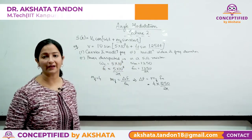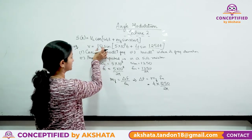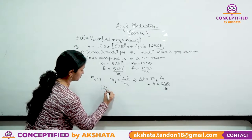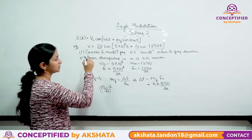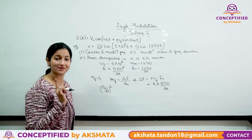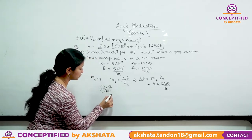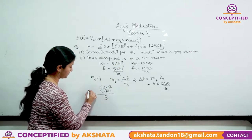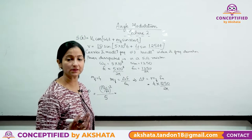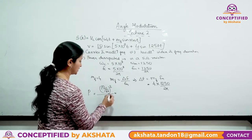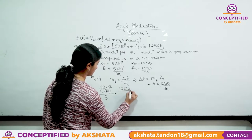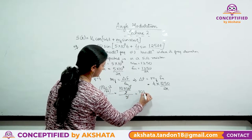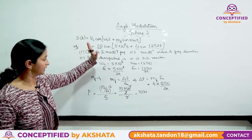For power dissipated in a 5-ohm resistor, power comes from the amplitude. We find the RMS value: 10/√2. Power = V²_rms / R = (10/√2)² / 5 = 100/2 / 5 = 10 watts. So this is your answer.